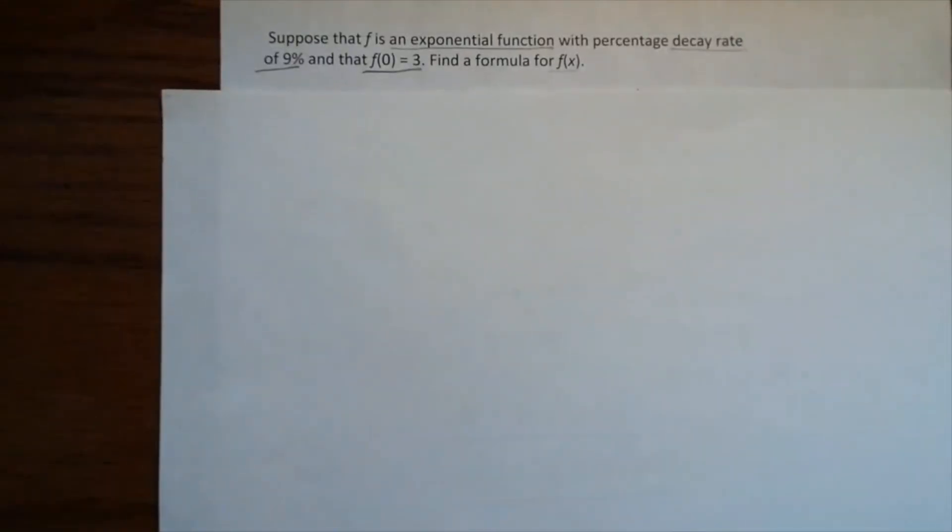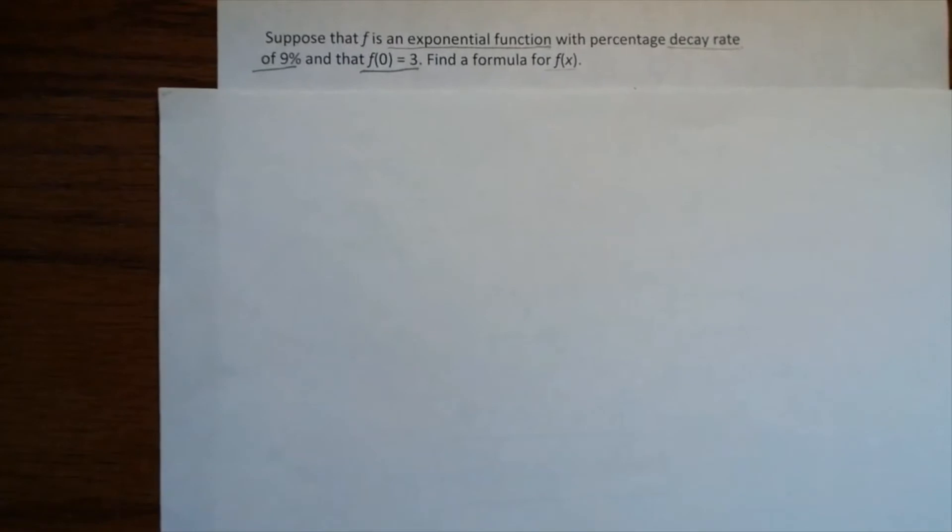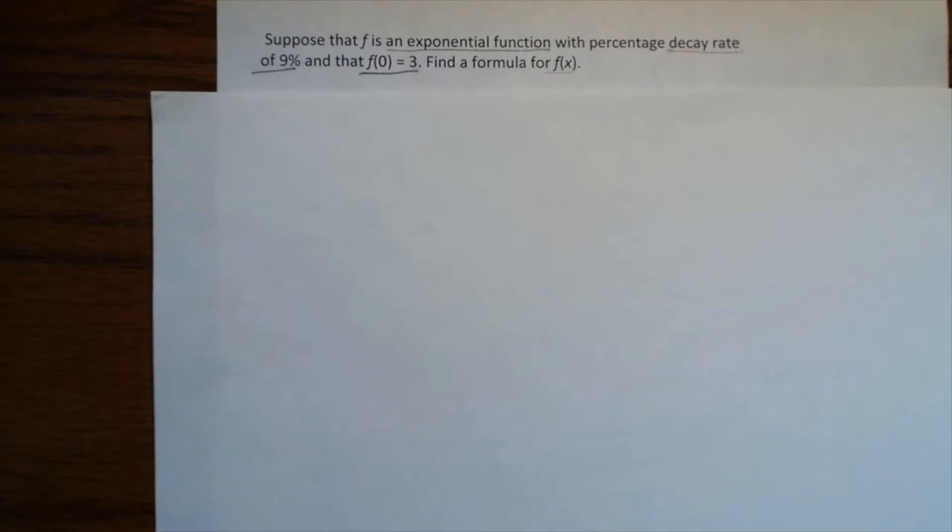Now the second example. Suppose f is an exponential function with a percentage decay rate of 9%, and f(0) = 3. Find a formula for f(x).